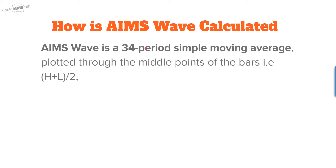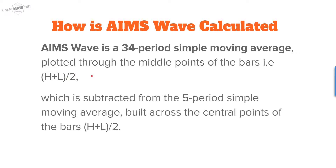How is AIMS Wave calculated? It is simply a 34-period simple moving average plotted through the midpoints of the bars — that is, high plus low divided by two, the average of the candle. That value is subtracted from the five-period simple moving average built across the central points of the bars. This might sound complicated, but bear with me — I will clarify it when we go to the charts.